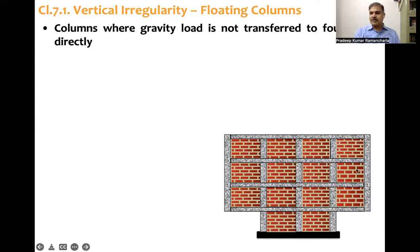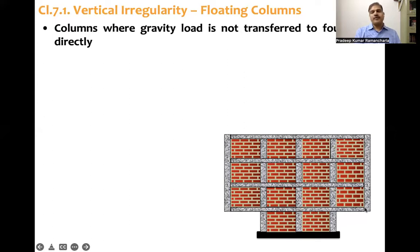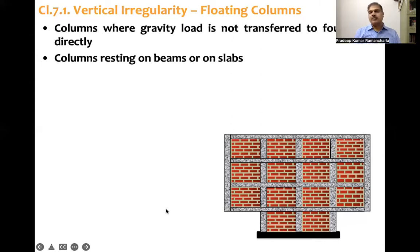Let's look at the picture. In this example there are five column lines. The middle three transfer column load directly to the foundation. But looking at the extreme left column, the fourth floor load is supported on the third floor, the third floor column load is supported on the second floor, and the second floor column load is supported on a beam — as you can see here. The same thing occurs on the extreme right side. This is a typical example of a floating column.